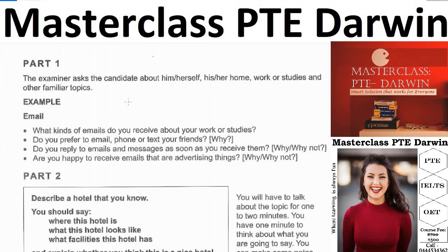Some people provide a lot of introduction — that's not a good way to answer. The best way is to go to the question and try to answer it first, then provide explanation. For example: 'I normally receive two to three work or study-related emails. Most of them are related to my assignments or class schedule, and if related to work, it's about my working roster.' You explain what the emails are about.